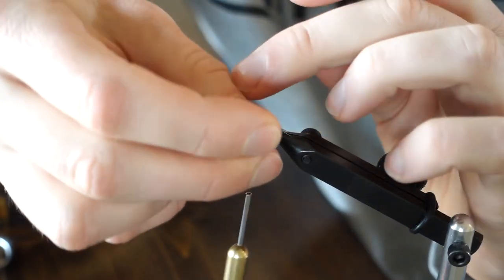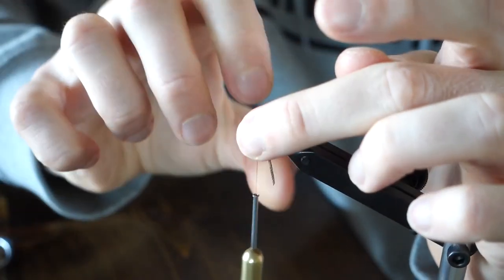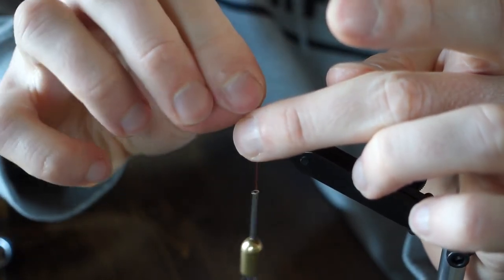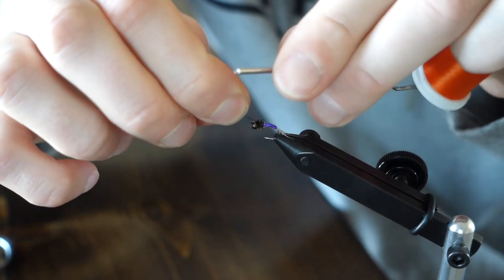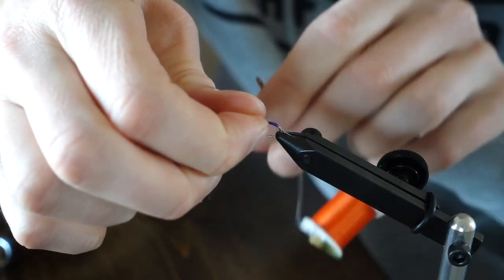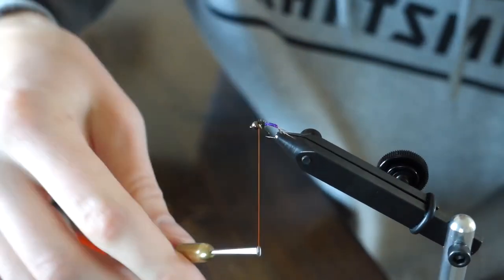I probably should have used a full length piece here. I think I was just using scraps. And it broke on me. No big deal. Happens all the time with peacock herl. Pretty fragile stuff.